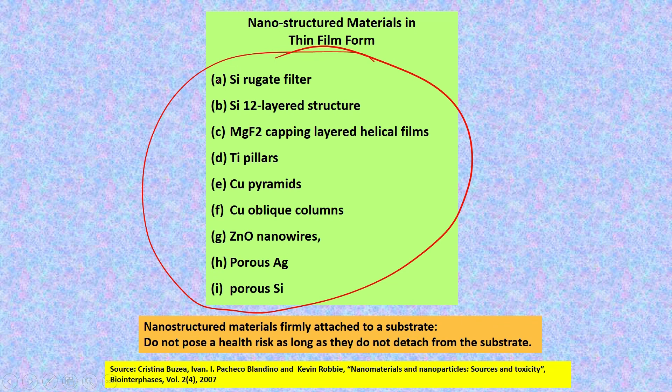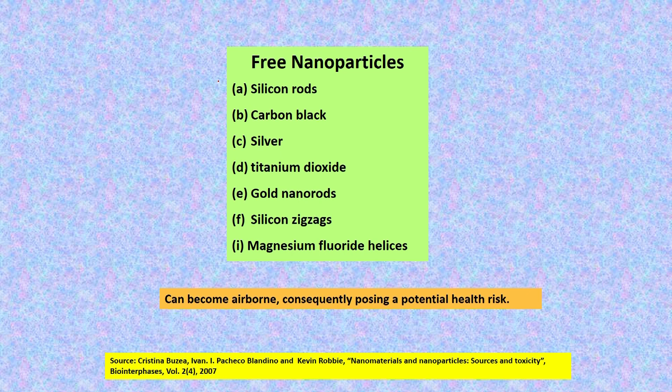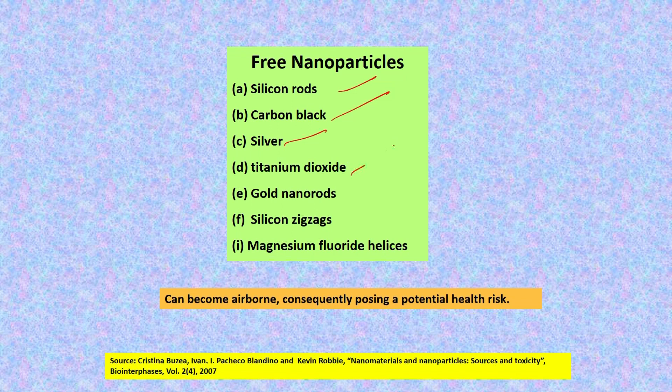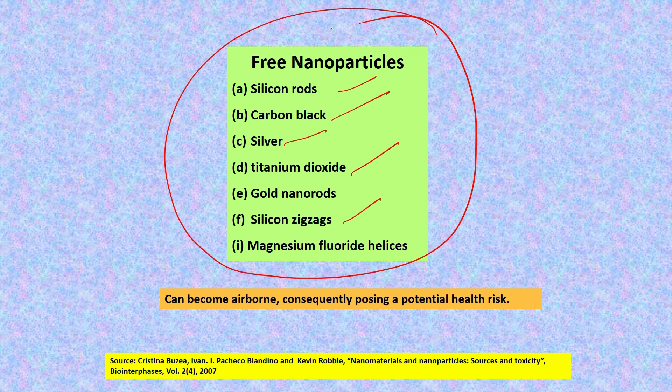Whereas, if we are utilizing free nanoparticles, they can become airborne very easily and as a result they pose a potential health risk. Examples of free nanoparticles include silicon rods, carbon black, silver, titanium dioxide, and silicon zigzags. So if we are using these things in our technology, we need to do risk assessment and determine what is the potential for them to become airborne and consequently pose a potential health risk.